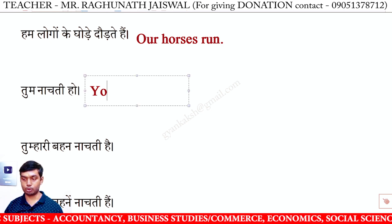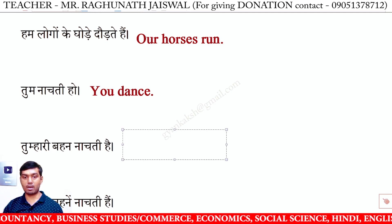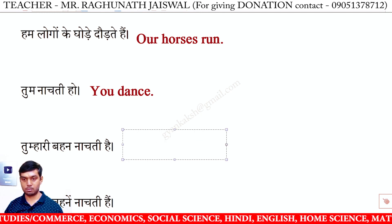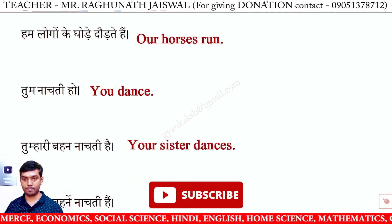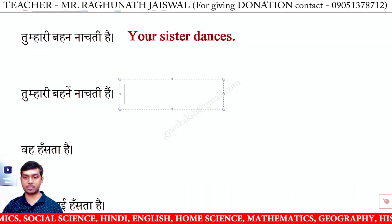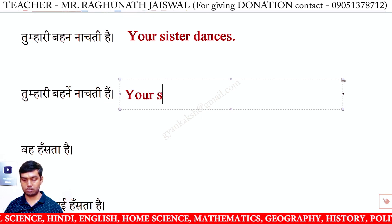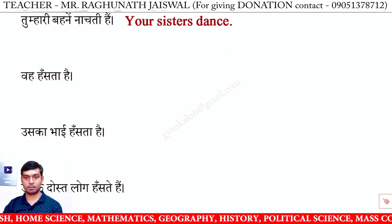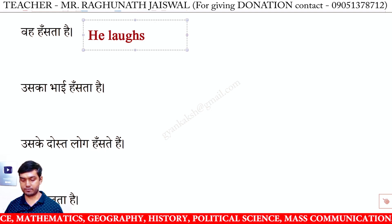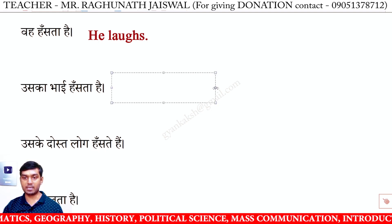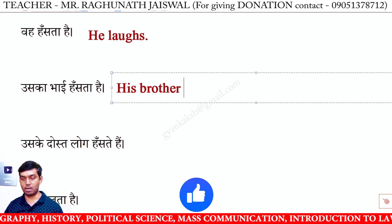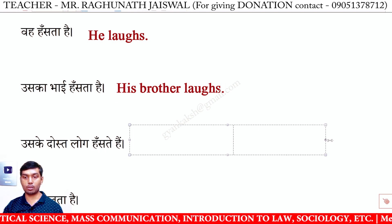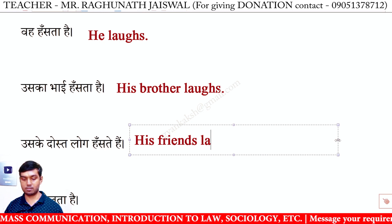तुम नाचती हो — You dance. तुम्हारी बहन नाचती है — Your sister dances. तुम्हारी बहनें नाचती हैं — Your sisters dance. वह हँसता है — He laughs. उसका भाई हँसता है — His brother laughs. उसके दोस्त लोग हँसते हैं — His friends laugh.